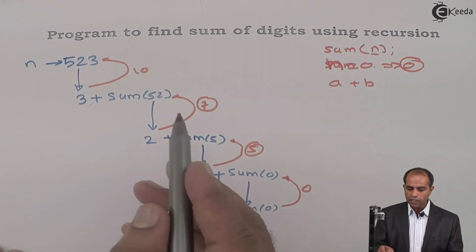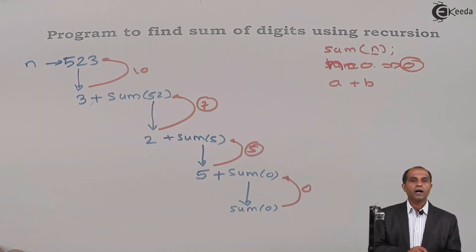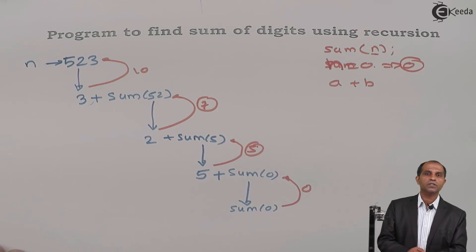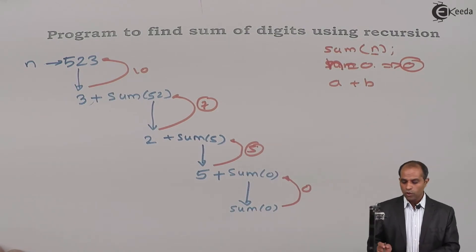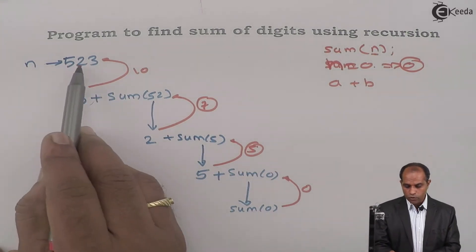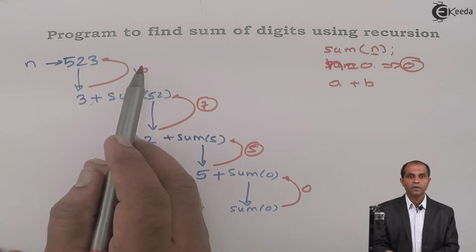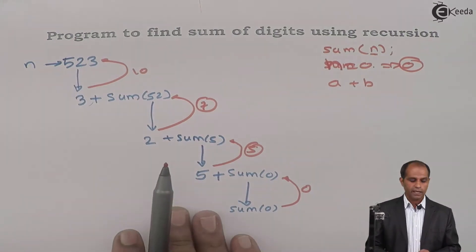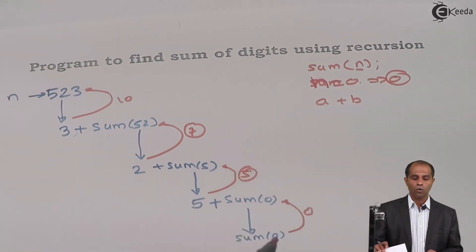The process of returning these values keeps on rolling back. And at some point of time, the number turns out as 0. When 0 comes back, the answer is returned 0. And finally, I get the value as 10. So 5 plus 2 plus 3 is 10. So what are the things which we said in the ladder diagram? Let's implement this in a code format. Let's put a program for implementing this.